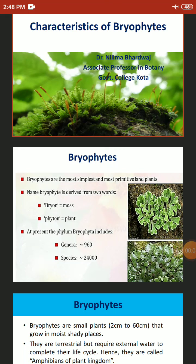Welcome students. Today let us discuss the characteristics of bryophytes. Bryophytes are the most simplest and most primitive land plants. The name bryophyte has been derived from two words: bryon meaning moss and phyton meaning plant. So moss-like plants are called bryophytes. The word bryophyta was coined for the first time by Brown in 1864.